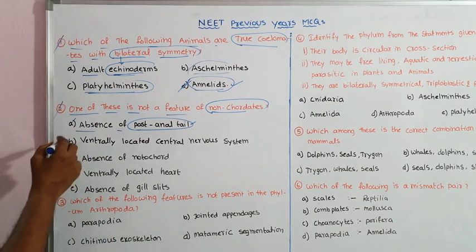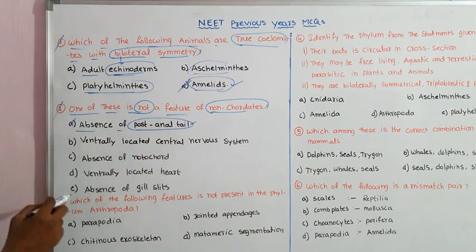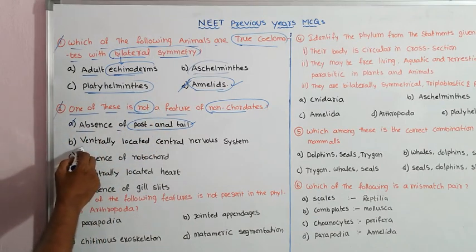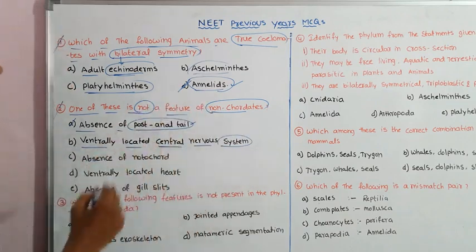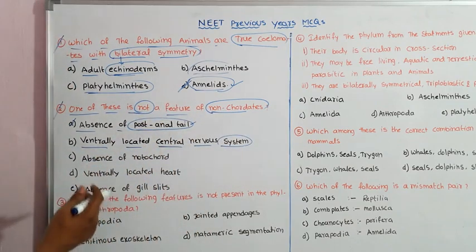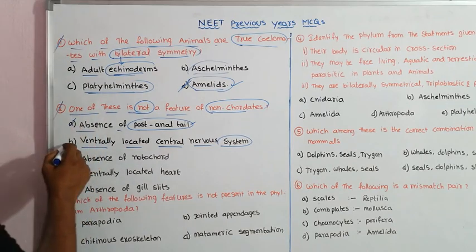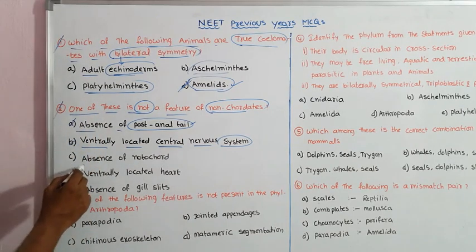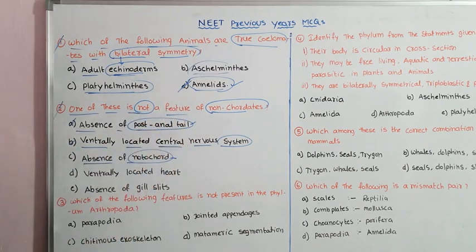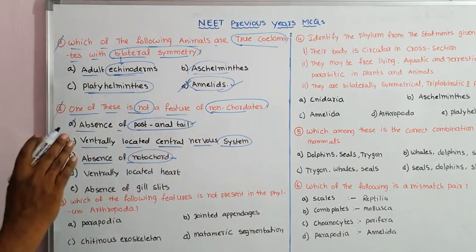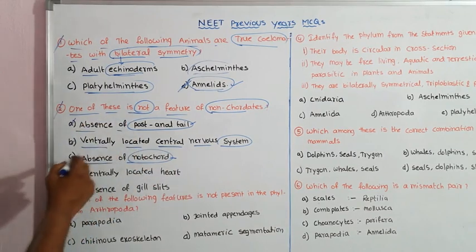Second question: One of these is not a feature of non-chordates. Examining the features of non-chordates — the absence of post-anal tail: post-anal tail is found in chordates, not non-chordates, so this is a correct option. Next, ventrally located central nervous system: non-chordates have a ventrally located central nervous system, so this is a correct feature.